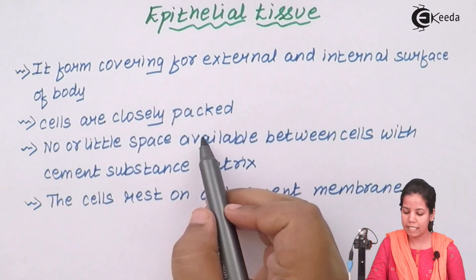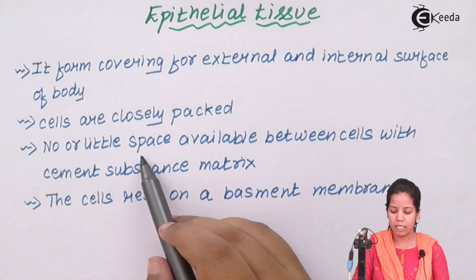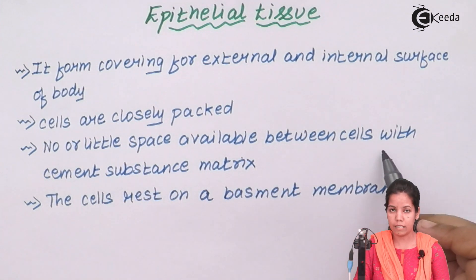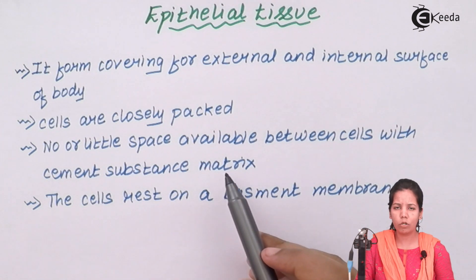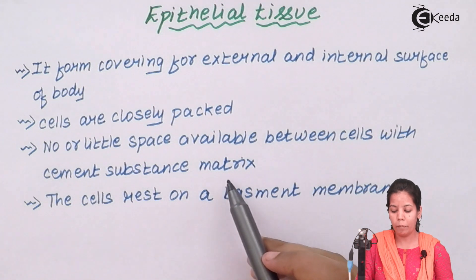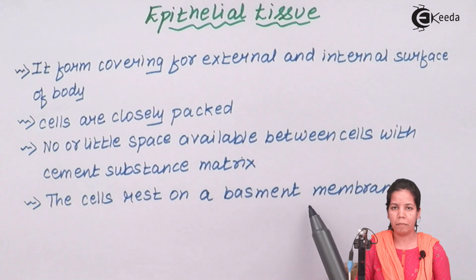The cells in epithelial tissue are closely packed. There will be little space available between the cells, and the cementing substance that acts as a glue between the cells is called matrix. The cells rest on a basement membrane.